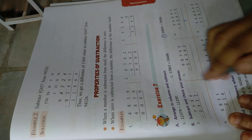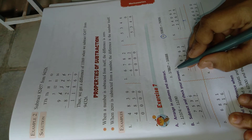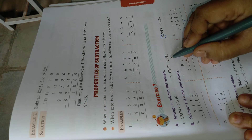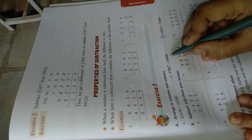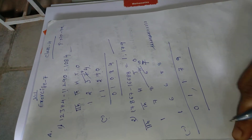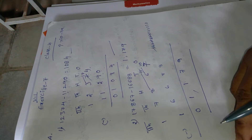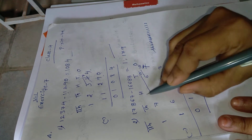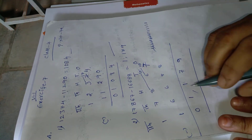Next, second problem: 17,867 minus 16,688. How to do this second problem? First of all, write in columns. Write the place values: ones, tens, hundreds, thousands, ten thousands.